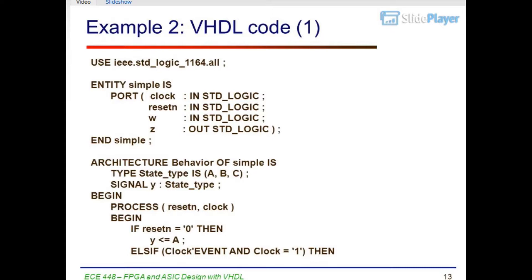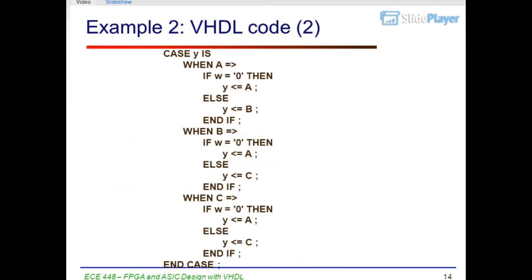Type state_type is (A, B, C). Signal Y: state_type. Begin process (reset, clock). If reset = '0' then Y <= A. Else if clock'event and clock = '1' then. EKI-448, FPGA and ASIC Design with VHDL. Example 2, VHDL code part 2.